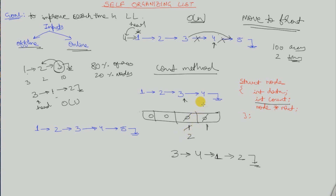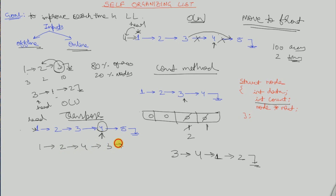A downside of the count method is that it requires extra space at each node. The third method is the Transpose method, which says the currently accessed node is swapped with the previous node. For example, if the head is at 1 and we access node 4, instead of moving 4 all the way to the front like the Move to Front method, node 4 is swapped with its previous element, resulting in the order: 4, 3, 5.